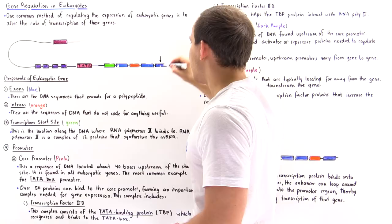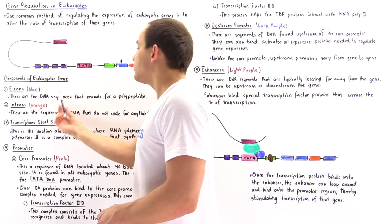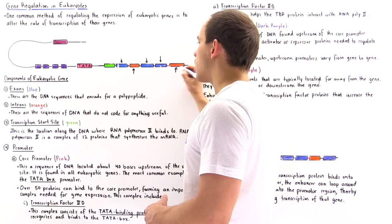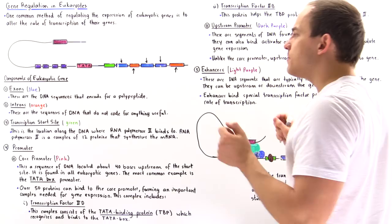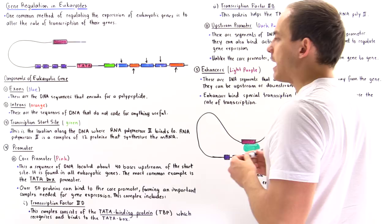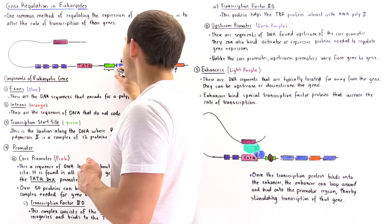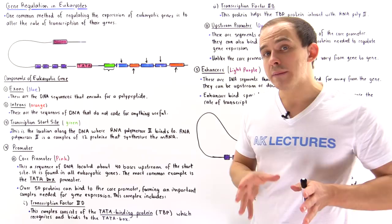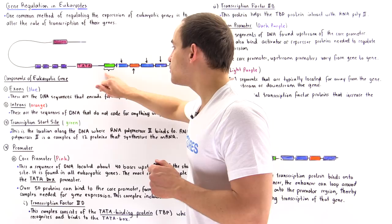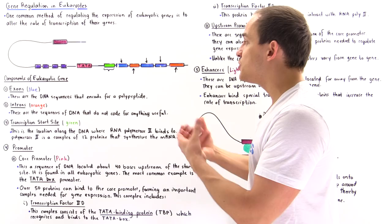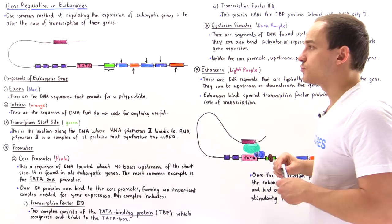The exons are segments of DNA that do code for a polypeptide, while the orange sections are the introns — they do not code for anything useful. During the process of RNA splicing, these intron sections are removed from the mRNA molecule and only the exons are left. The green segment is the transcription start site, where transcription actually begins. A special protein complex of 12 proteins known as RNA polymerase II binds onto the transcription start site, and this is where initiation takes place.